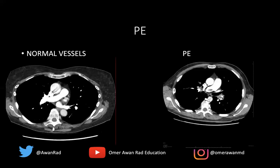Here's what a PE looks like on CT. On the left is a normal CTA — this axial image shows the right and left lungs as black areas, the mediastinum, sternum, ribs, and scapulae. Remember, by convention, the left side of the image is the patient's right. In the mediastinum, these bright areas are vessels because contrast was injected. This is the ascending aorta, the descending thoracic aorta, the main pulmonary artery, the right pulmonary artery, and the left pulmonary vein. The pulmonary artery is to the left of the ascending aorta. Notice it is nice and bright with no filling defects.